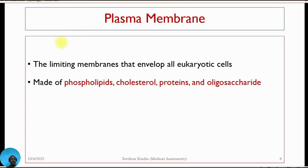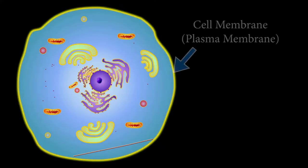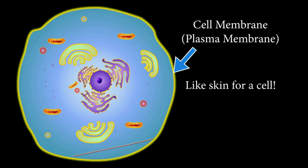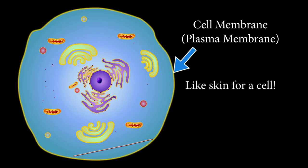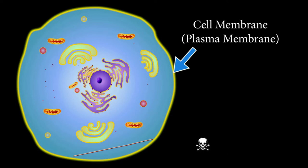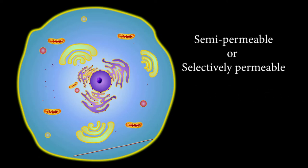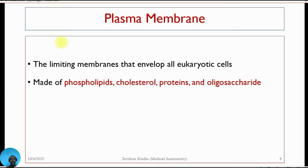The plasma membrane is the limiting membrane that envelops all eukaryotic cells. It surrounds all cells and also surrounds organelles found within the cell. It acts like skin for a cell, preventing unwanted materials from entering and permitting wanted materials to enter, giving it semi-permeable or selectively permeable properties.